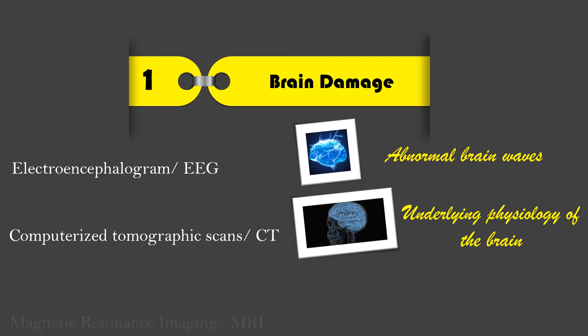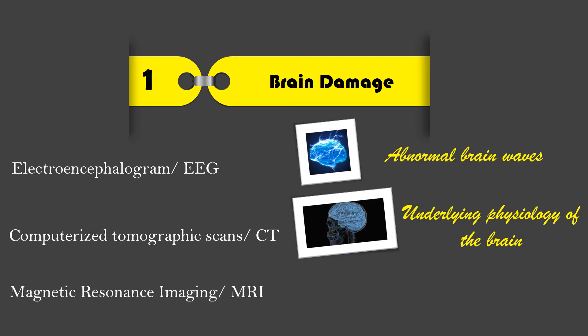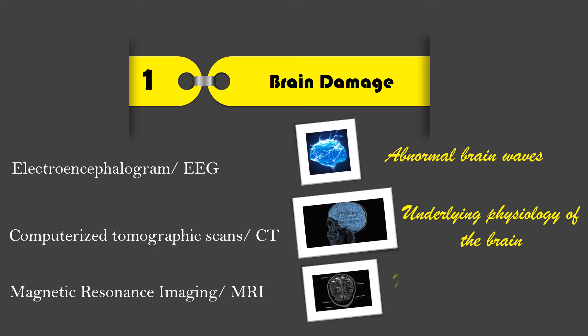Magnetic Resonance Imaging or MRI — this is a neuroimaging technique whereby radio waves are used to produce cross-sectional images of the brain. CT scans and MRI results show that the brains of those with learning disability suffered from a disruption in the development of the neural cells during the early months of pregnancy. This means that the neurons in the brain area did not develop normally.